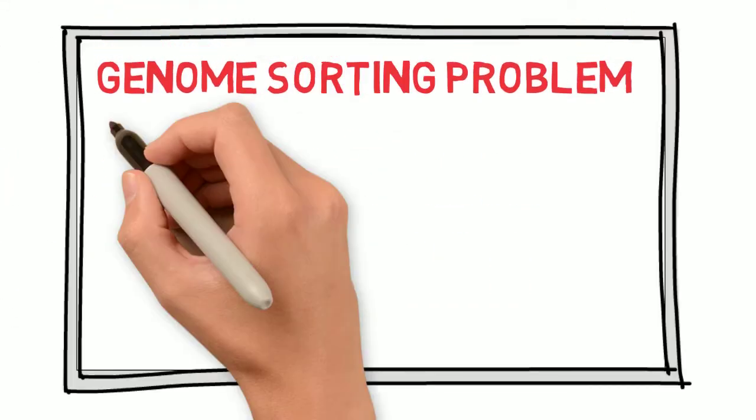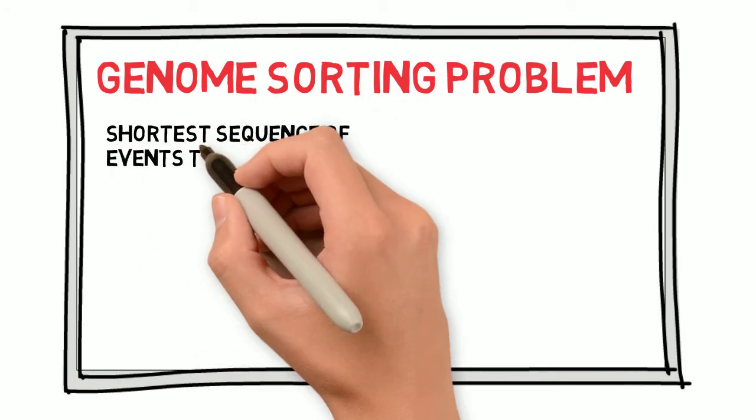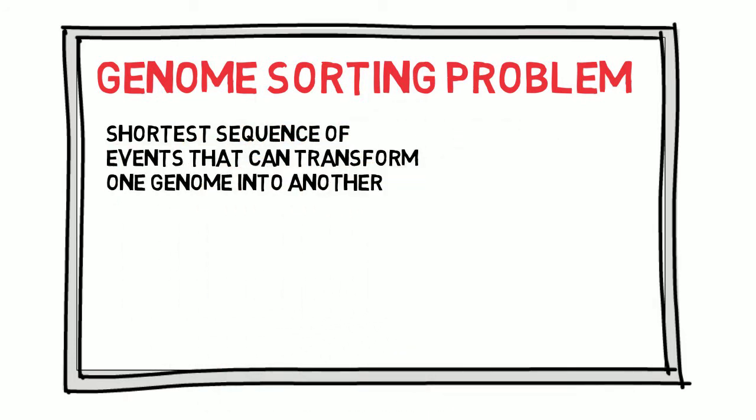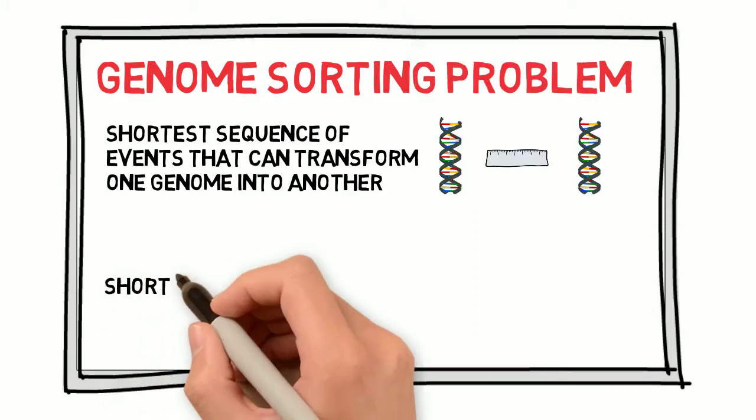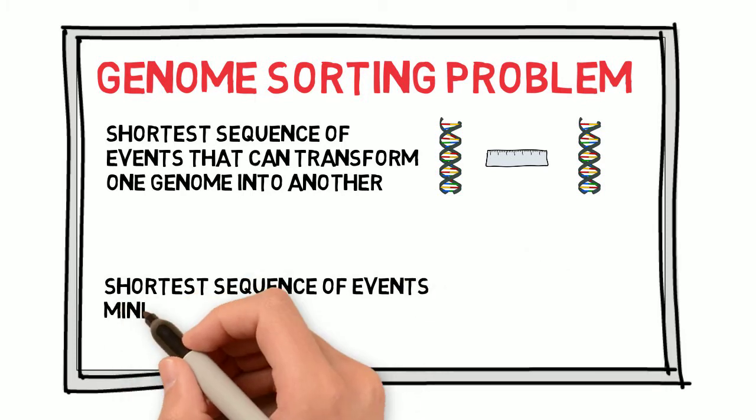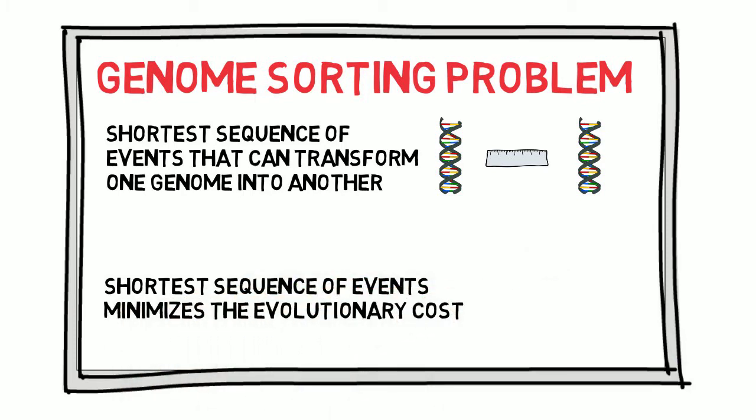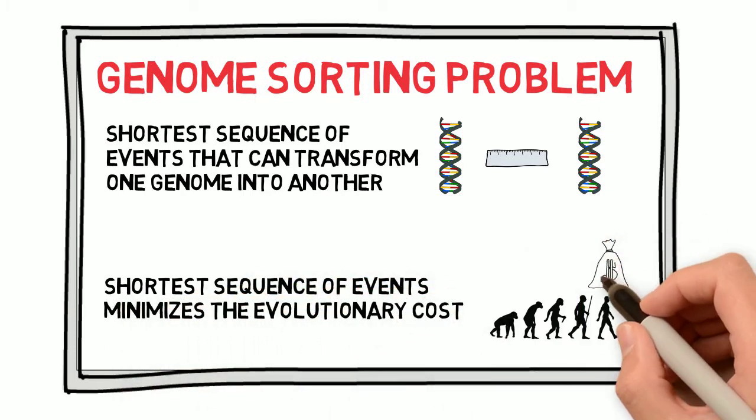The genome sorting problem consists of determining the shortest sequence of events that can transform one genome, or one gene order, into another. This shortest sequence of events is the one that minimizes the evolutionary cost, or the total number of evolutionary events.